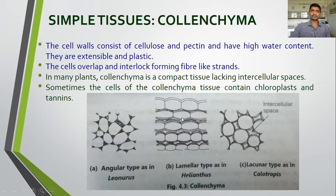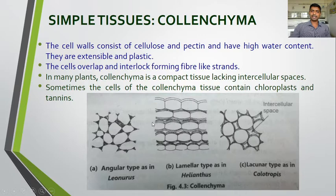This is all about the second simple tissue, that is collenchyma. The collenchyma is thick-walled, living, and possesses the deposition of cellulose and pectin. Intercellular spaces are present and in some plants these spaces are filled with the deposition of cellulose and pectin. Collenchyma in some plants may occur in the form of a single layer — layers one above the other form the laminar type found in Helianthus. In Calotropis the intercellular spaces are empty, so it is called lacunar.